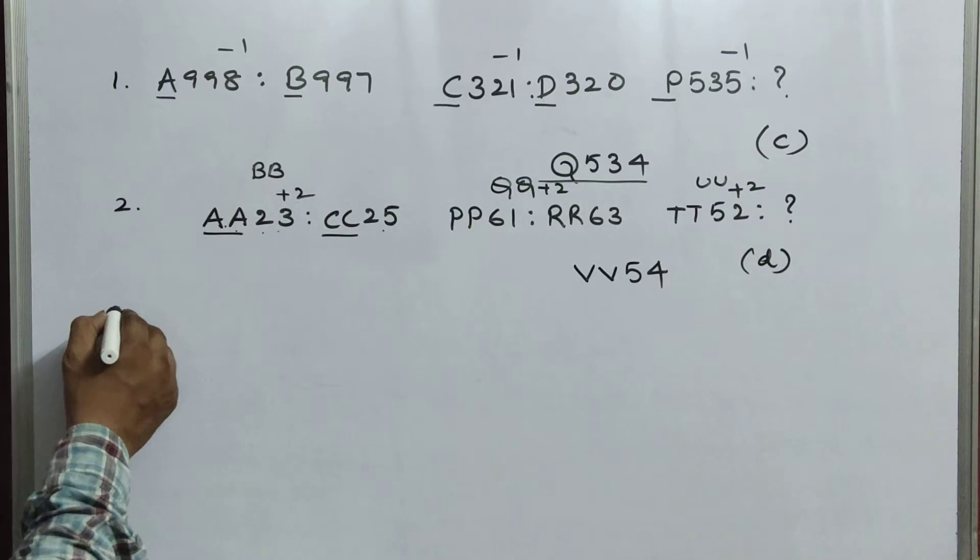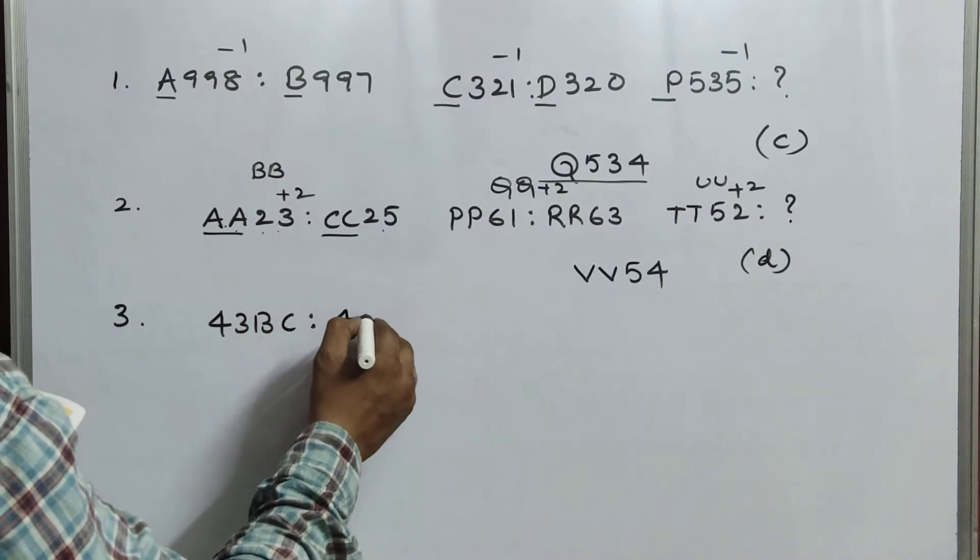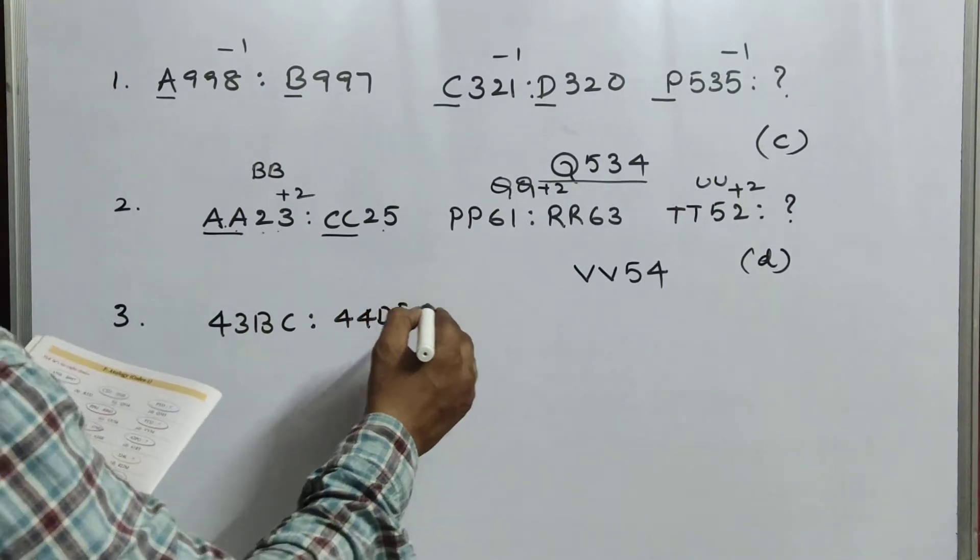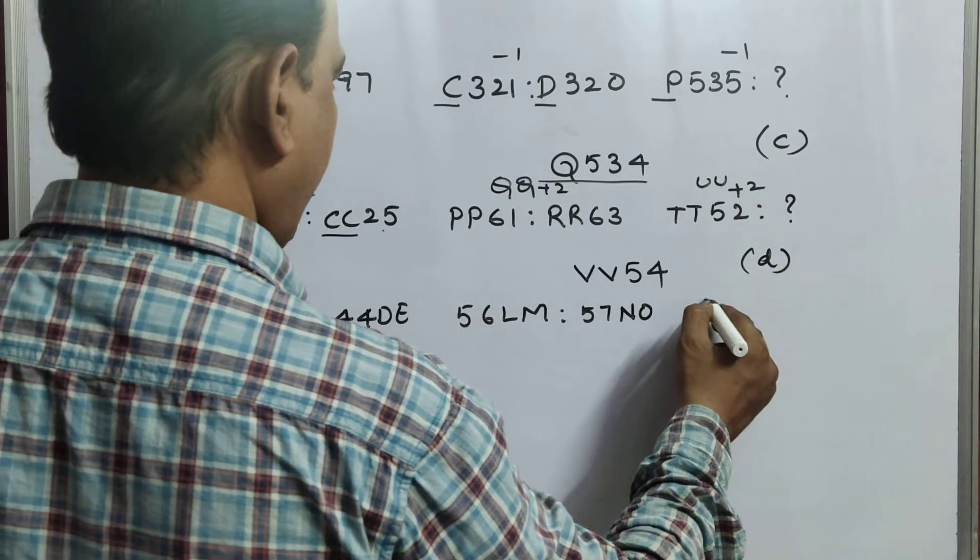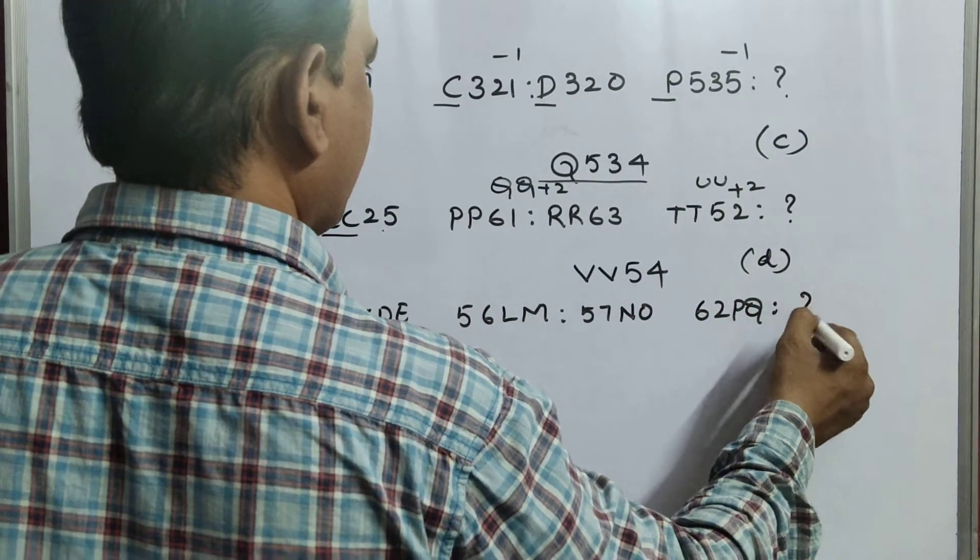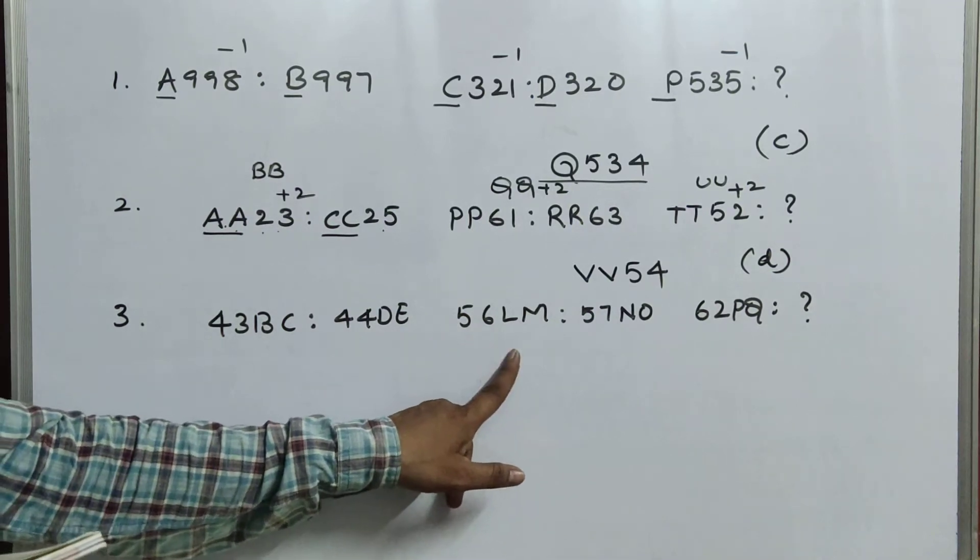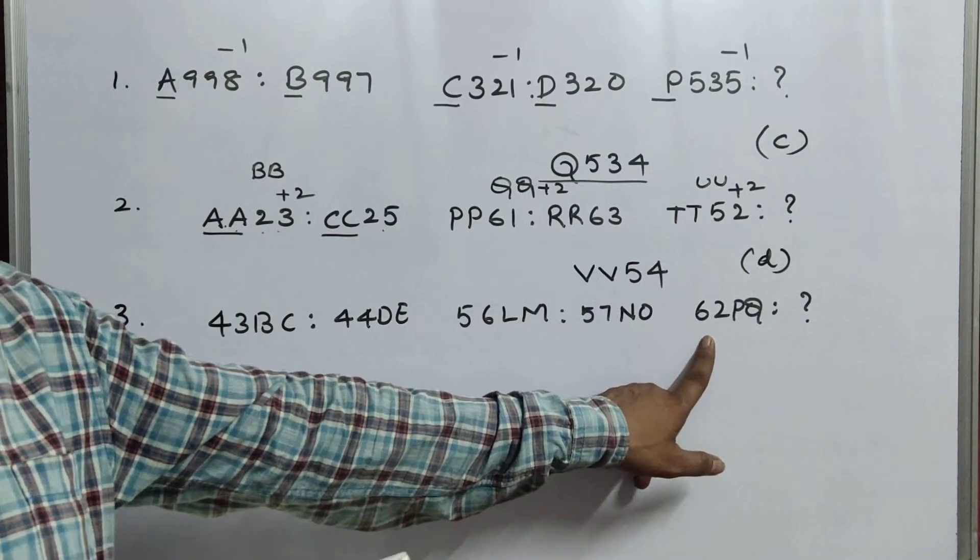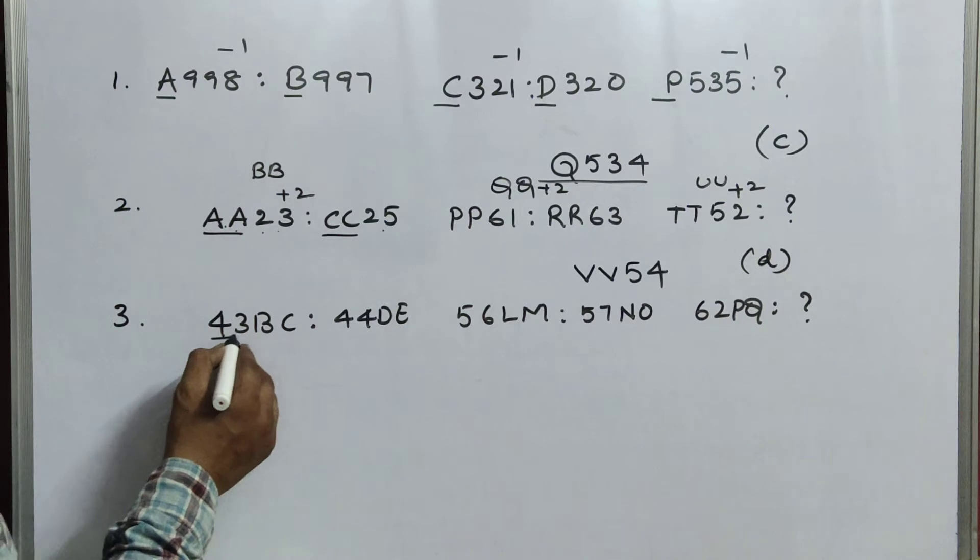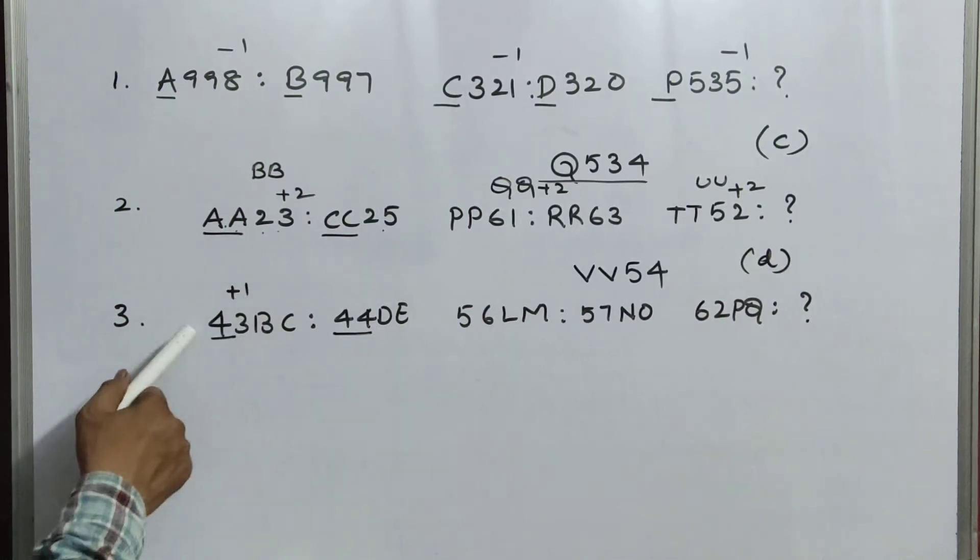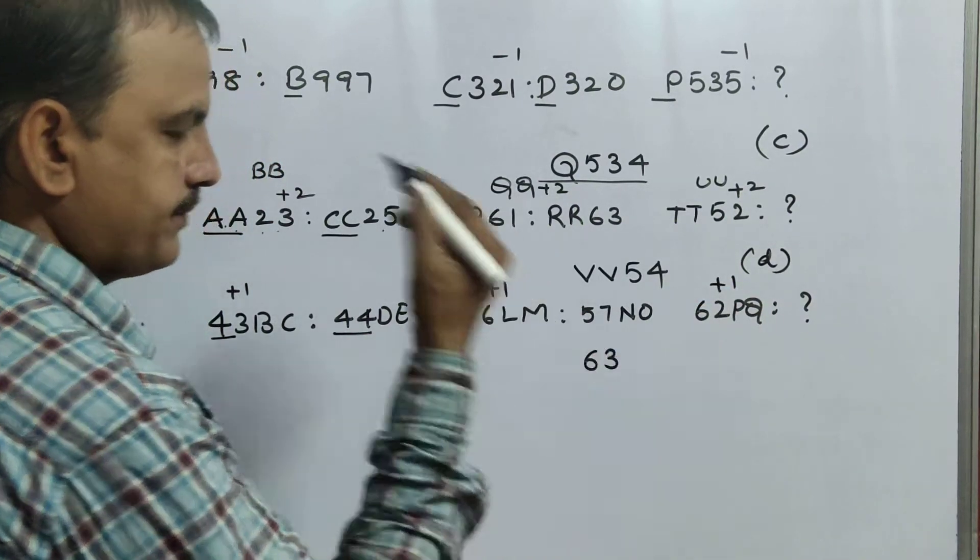Coming to the third question, children. This is page number 6 only. 43, BC is to 44, DE. Next, 56, LM is to 57, NO. Next, 62, PQ is to question mark. Now, we will go about the sequences. That means, how we are going to use the pattern. We will see. 43, here, 44. That means, here, plus 1. So, 43 plus 1 is 44. 56 plus 1, 57. 62 plus 1. How much? 63.